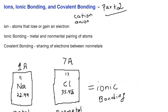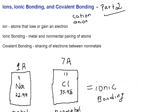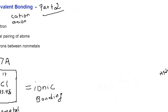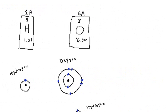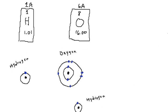This is part two of ions, ionic bonding and covalent bonding. This video is going to cover the section on covalent bonding. The example I'm going to give for covalent bonding is the formation of a water molecule.